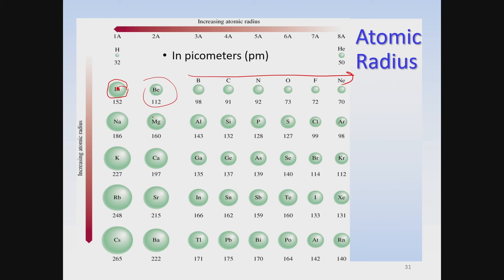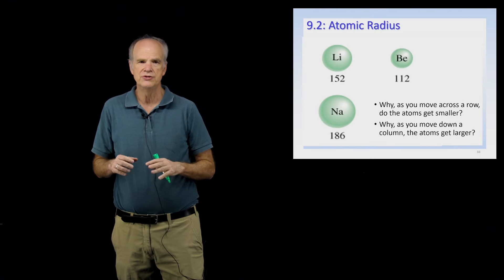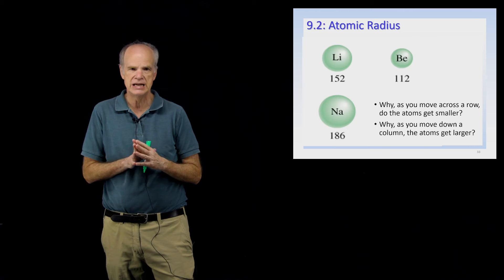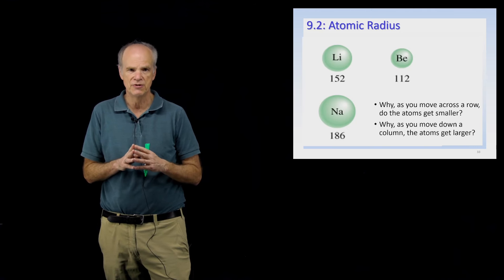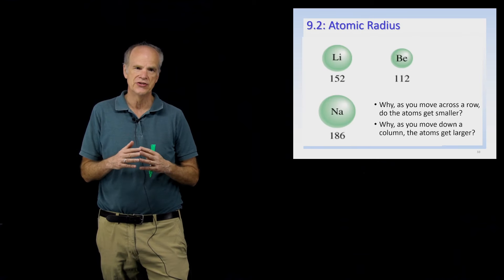At the same time, as you go down a group of elements, you will notice that the atoms, as indicated by their radii, get larger and larger. So now what I want to do is talk about why that happens. I want to explain why, as you go across a row or a period of elements, the radii are getting smaller and smaller, and why, as you go down a group of elements, the radii are getting larger and larger. This is something you need to know.